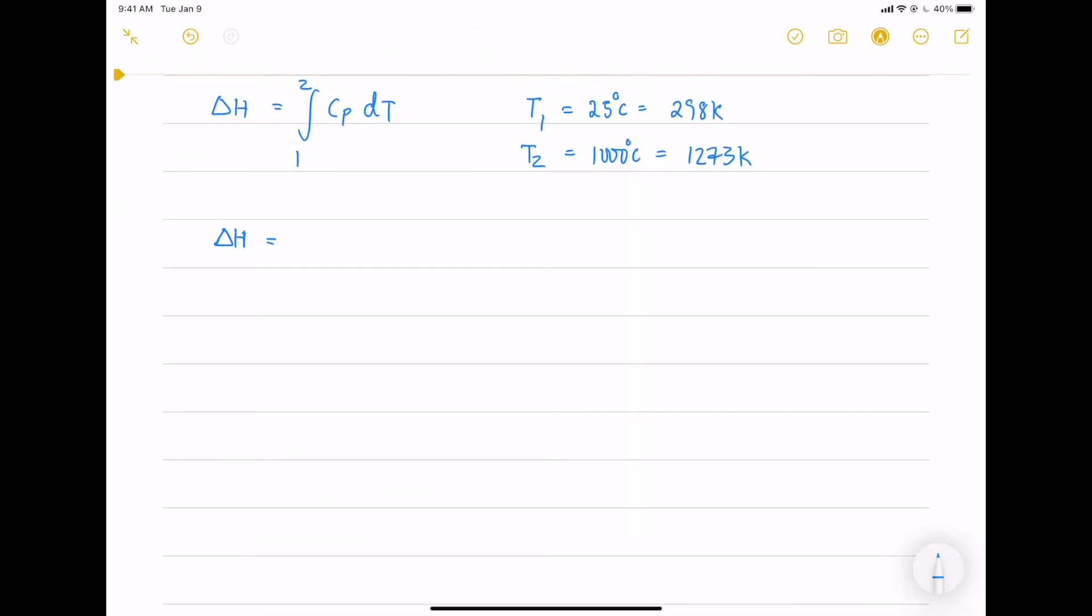Now, we calculate the delta H by doing the integral CP dt. So, now I am writing down the CP and I integrate it.